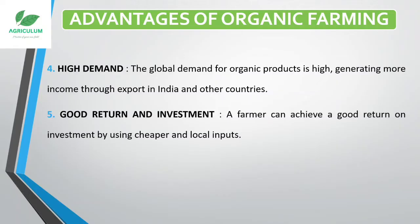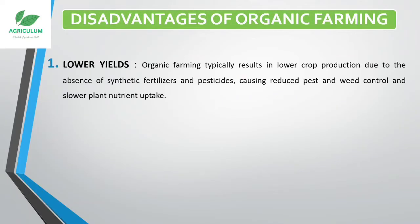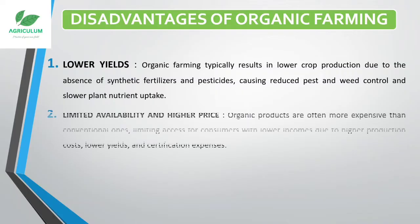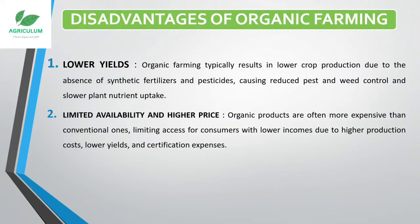Now we will see the disadvantages of organic farming. The first is lower yield — organic farming typically results in lower crop production due to the absence of synthetic fertilizers and pesticides, causing reduced pest and weed control and slower plant nutrient uptake. The second is limited availability and higher price — organic products are often more expensive than conventional ones, limiting access for consumers with lower incomes due to higher production costs, lower yields, and certification expenses.